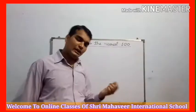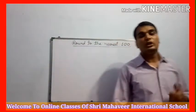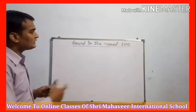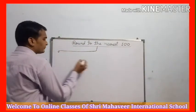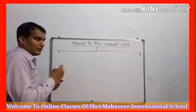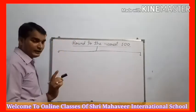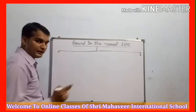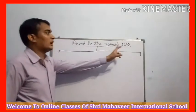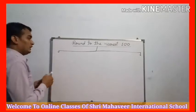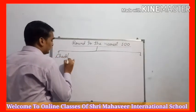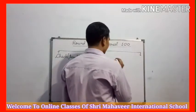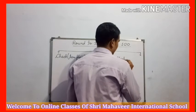अब मैं आपको nearest 100 सिखाने वाला हूं. First जो हमारा rounding numbers का topic था वो था round to the nearest 10, then I am going to teach you round to the nearest 100. Nearest 100 के लिए भी हम उसी rule को follow करेंगे. जब हम nearest 10 find करते हैं तो हम ones place check करते हैं, जब हम nearest 100 find करते हैं तब हम 10th place को check करते हैं.